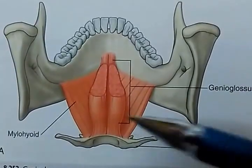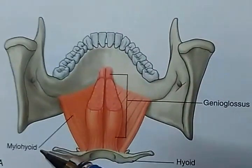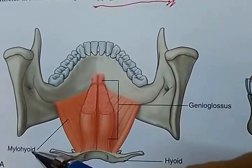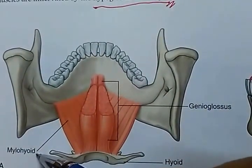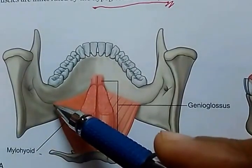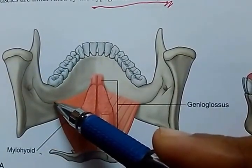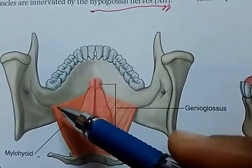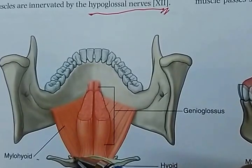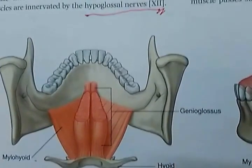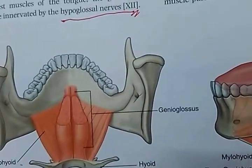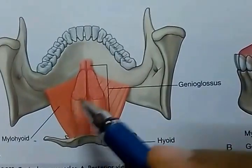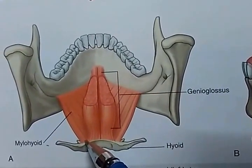In this particular image, I'm going to focus mainly on the mylohyoid. This muscle arises from the mylohyoid line of the mandible, and it inserts into the median fibrous raphae and the adjacent part of the hyoid bone.